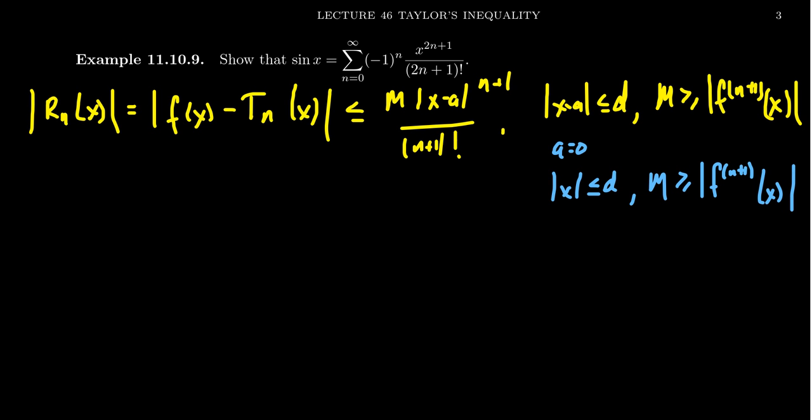Our inequality will look like r_n of x will be less than or equal to m times the absolute value of x to the n plus 1 over n plus 1 factorial. So that's going to be the inequality we're going to work with here. Now we have to investigate this upper bound m for the derivatives.